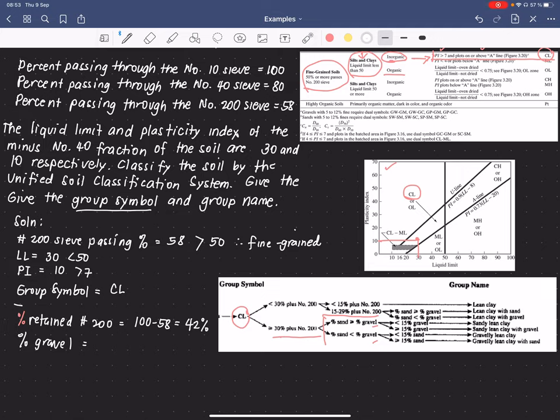We now proceed to this portion and identify if the percentage sand is greater than the percentage gravel or less than the percentage gravel. To do that, we have to determine the percentage gravel. In this case, since 100% passed the number 10 sieve, that means that the percentage gravel is 0. Nothing is retained on the number 4 sieve. While the percentage sand is equivalent to 100 minus 58, and there is 0 gravel, so this is still 42%.